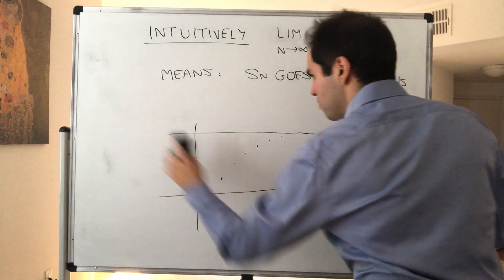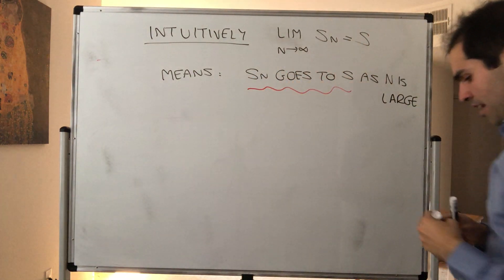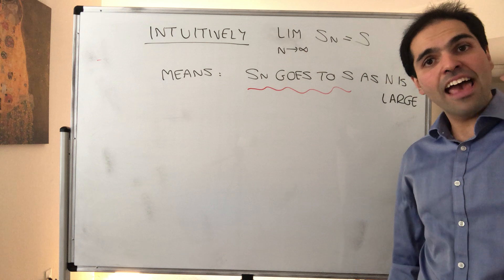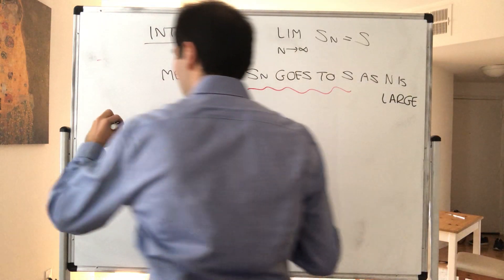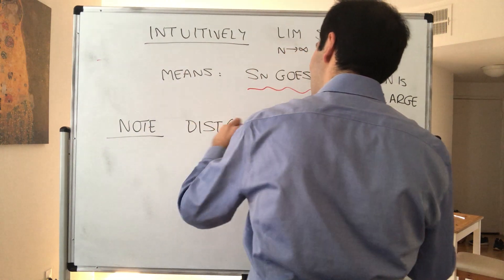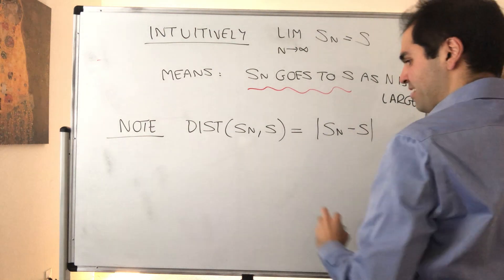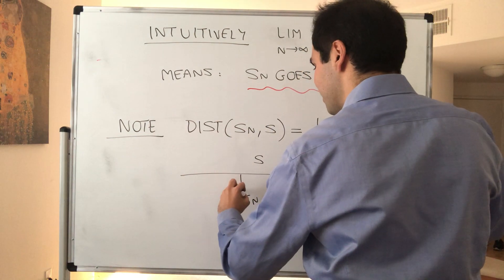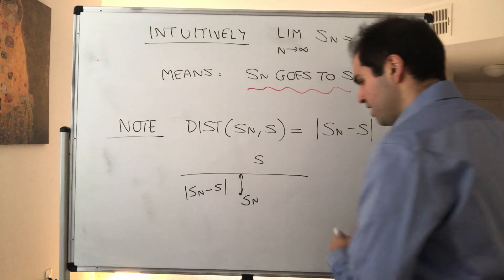What does it mean for Sn to go to s? All that this means is that Sn is very close to s. In other words, the distance between Sn and s is very small. From section 3, we defined a notion of distance: the distance between Sn and s is just the absolute value of Sn minus s. We want this distance to be small.